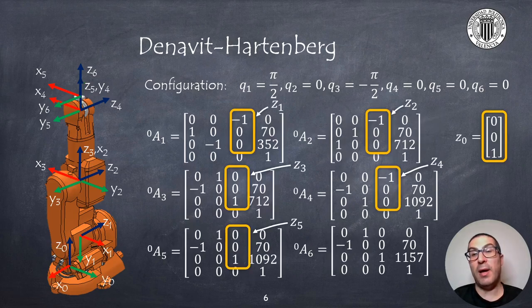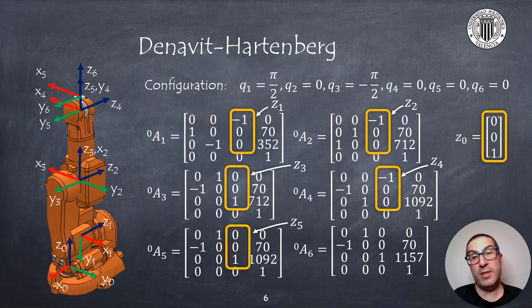Once we have computed and validated all relative frames then we can compute also the absolute reference frames, that is with respect to the robot base. Again we can check if the results are correct particularly the third column which corresponds to the direction of the Z axis. Please remember that in order to obtain the matrix A₀₂ or A₂₀ then we have to multiply the matrix A₁₀ with the matrix A₂₁ shown before.